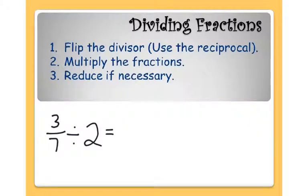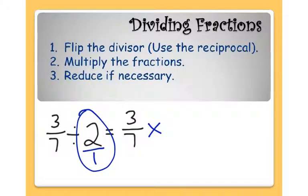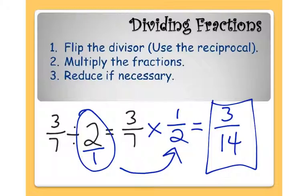Let's take a look at that again. Here we have 3 sevenths divided by 2 — that's the whole number we're dividing by — so we have to use the reciprocal of 2, or the flipped version of 2, when we rewrite it as a multiplication problem. I start with 3 sevenths and turn the division into multiplication: 3 sevenths times the reciprocal of 2. Since 2 isn't a fraction, I write it as 2 over 1, and then flip it to get 1 over 2. So 3 sevenths times 1 over 2: 3 times 1 is 3, 7 times 2 is 14. So 3 sevenths divided by 2 is 3 fourteenths.